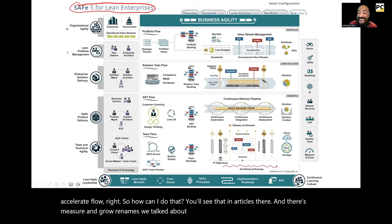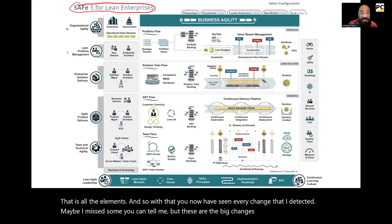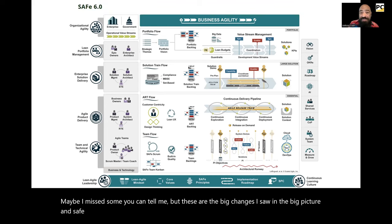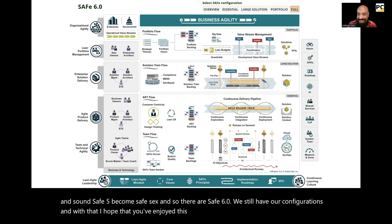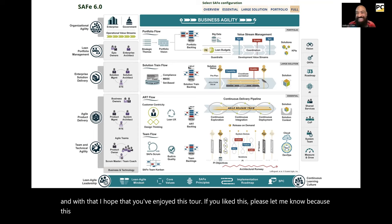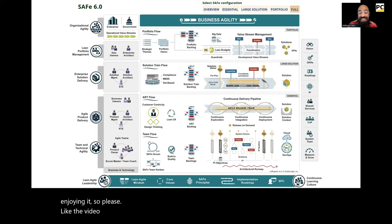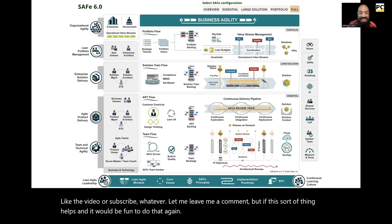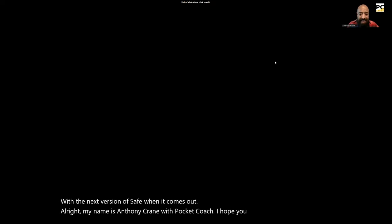That is all the elements. You now have seen every change that I detected in the big picture — maybe I missed some, you can tell me, but these are the big changes I saw as SAFe 5 becomes SAFe 6. We still have our configurations. I hope you've enjoyed this tour. If you liked this, please let me know because this took a little bit of work, and I'll do it again if people are enjoying it. Please like the video, subscribe, or leave me a comment. My name is Anthony Kramer, Pocket Coach — I hope you enjoyed this journey.